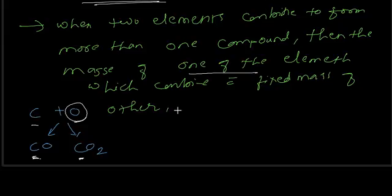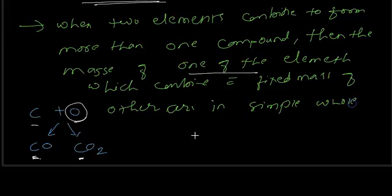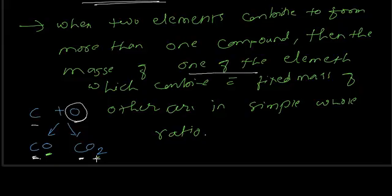When oxygen combines with carbon to give either carbon monoxide or carbon dioxide, it combines in such a way that the ratio of oxygen in carbon monoxide and carbon dioxide is a simple whole ratio. So the masses of one element which combine with the fixed mass of the other element are in a simple whole ratio.